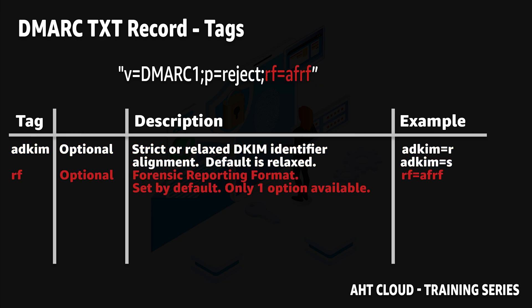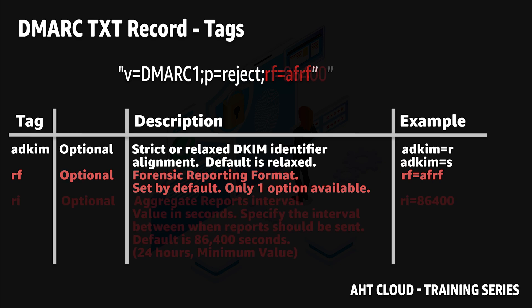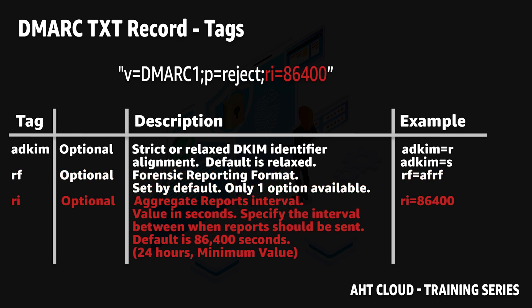The rf tag is an optional tag that allows you to specify the DMARC forensic report format. There is only one value, which is afrf — this is used by default. You shouldn't really need to include this tag, but maybe in the future there could be more report types.